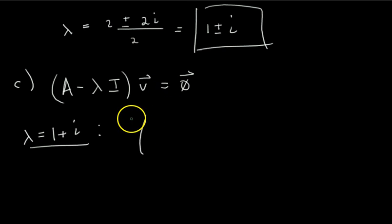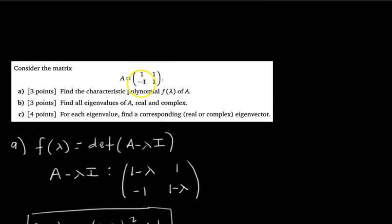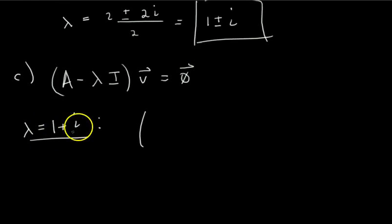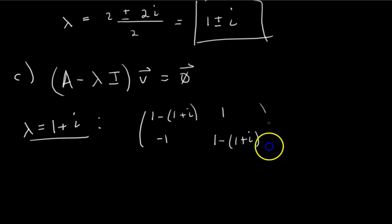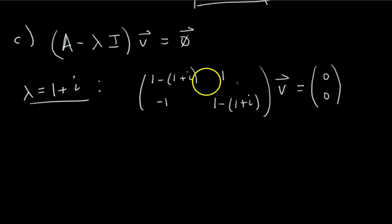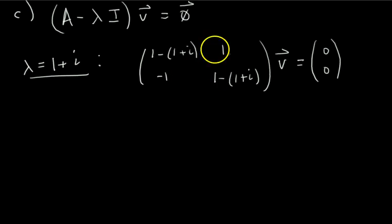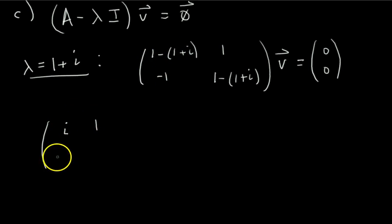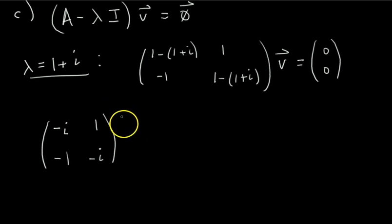For lambda equals 1 plus i, we compute A minus lambda I. Our original A was 1, 1, negative 1, 1. We subtract 1 plus i from the main diagonal entries, giving us 1 minus lambda, 1, negative 1, 1 minus lambda. Plugging in: 1 minus (1 plus i) equals negative i on the diagonal entries. So the matrix simplifies to: top left is negative i, then 1, negative 1, then bottom right is negative i. This times V equals the zero vector.